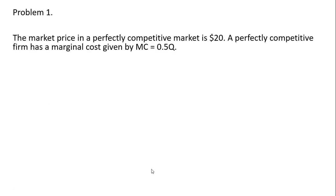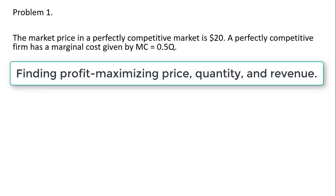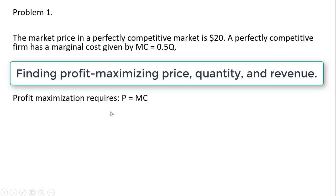Problem one. The market price in a perfectly competitive market is $20. A perfectly competitive firm has a marginal cost given by 0.5Q, where Q is the quantity of the competitive firm's output. We want to find the profit maximizing price, output, and the revenue for this firm. Profit maximization in perfect competition requires that price equal marginal cost.